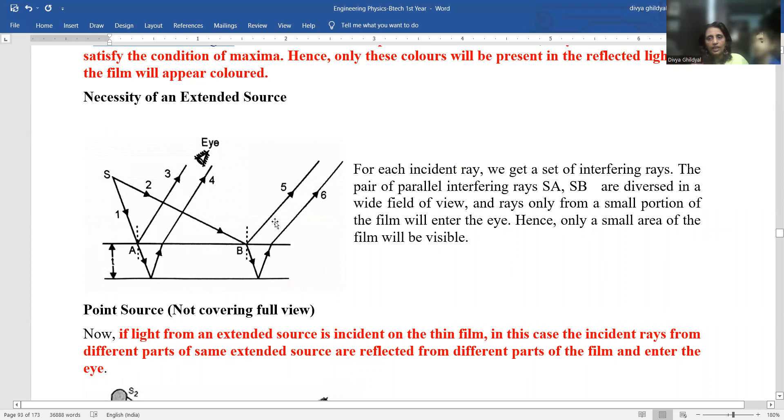See, for each incident ray, we get a set of interfering rays. See, this is a point source S, right? And what is happening? Look at it. It is once again the same ray diagram we are seeing for thin film interference. This point source S is making light incident on this thin film and after multiple reflections and all, it is entering the human eye and you are getting a fringe pattern.